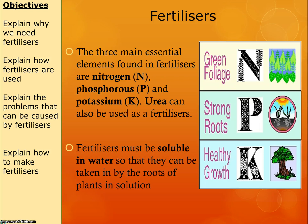Urea is something that can also be used as a fertiliser. Urea sounds like urine because urea is the main component of urine — it's what's dissolved in water to make urine. So it's quite possible to use bio-toilets as a means of fertilisation.